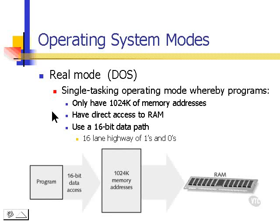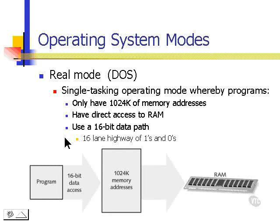Real mode had direct access to RAM, and it used a 16-bit data path. A 16-bit data path is like a 16-lane highway of ones and zeros. That's what we used in real mode. Real mode is typically not used today.